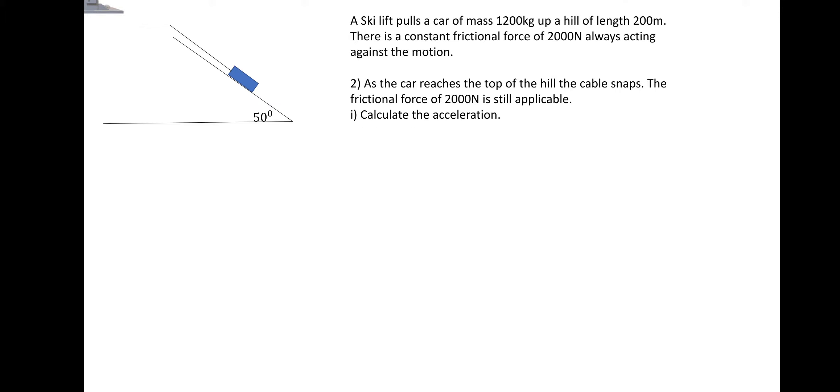Let's have a look at the next one. As the car reaches the top of the hill, the cable snaps. The frictional force of 2000 Newtons is still applicable. Calculate the acceleration. To do acceleration, we need force over mass. The question is, what is the force that we're dealing with? We know that the 2000 Newtons is still applicable, only this time, because the car is travelling down the ramp, the frictional force would act up the ramp. Then we still need the component that's parallel to the ramp, the component of the weight, which we got earlier, which was the 9018 Newtons.